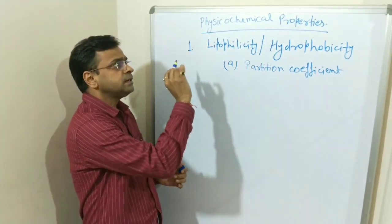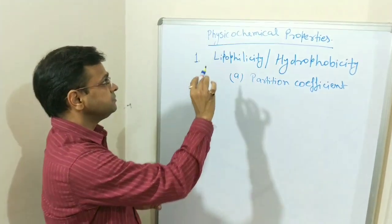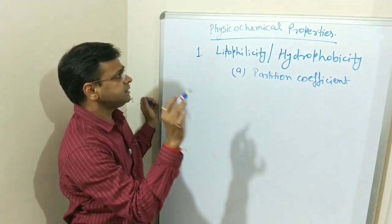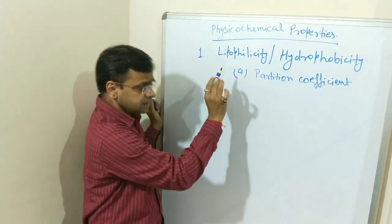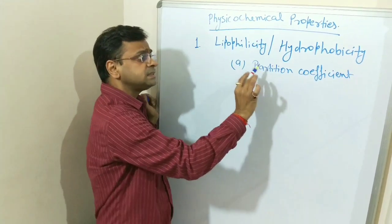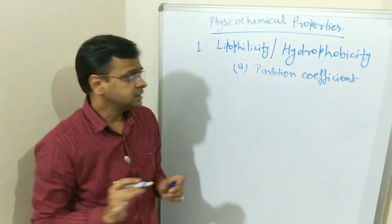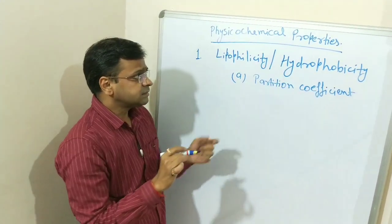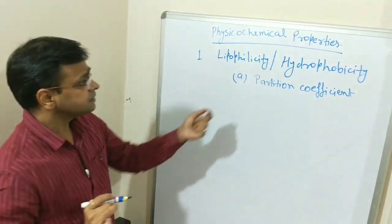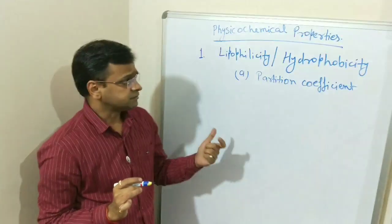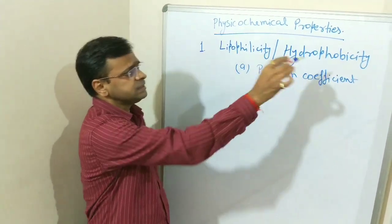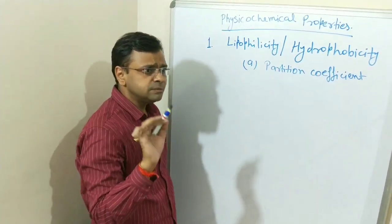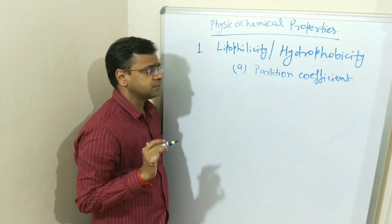Now I continue to physicochemical properties. The first property is lipophilicity, or you can say hydrophobicity, and it can be measured by partition coefficient. So why is lipophilicity so important? We must understand why it is so important.